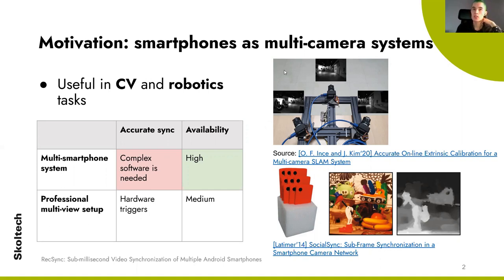Although professional multi-camera systems provide accurate synchronization with hardware triggers, smartphones are more widely available. They contain cameras, processing capabilities, and wireless communication. All of that makes them good candidates for this task.